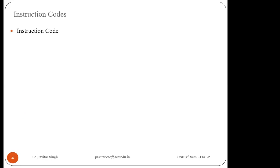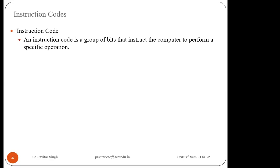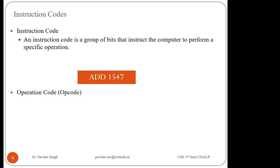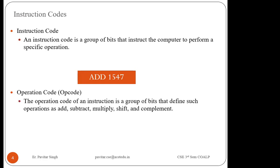An instruction code is a group of bits that instruct the computer to perform a specific operation. For example, the bits 0101 form a group that tells the computer what operation to perform — this is the instruction code. For example, 'ADD 1547' — the complete thing is the instruction code, while 'ADD' alone is your operation code (opcode).